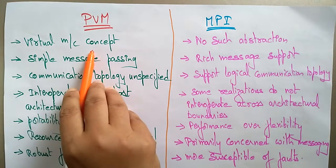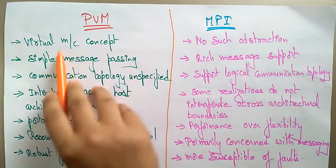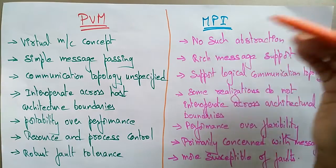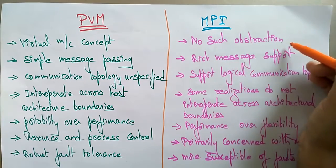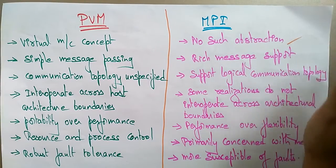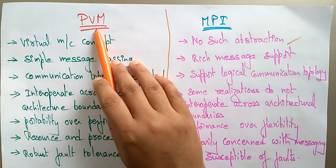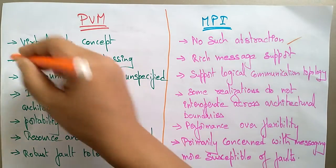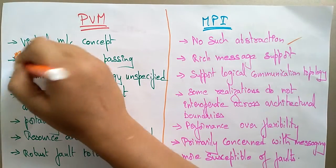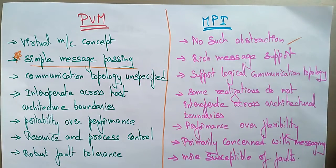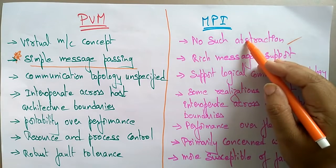PVM is a virtual machine concept, but MPI is not a virtual machine concept — no such abstractions are needed for MPI. PVM uses simple message passing, but Message Passing Interface provides rich message support.